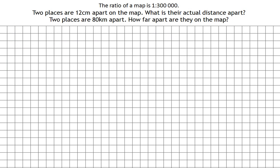We're going to have a look at a problem involving map ratios here. So we're told at the start of the question the ratio of a map is 1 to 300,000. That means that 1 centimeter on the map is 300,000 centimeters in real life.